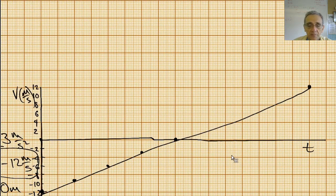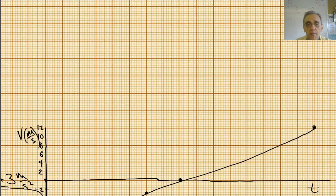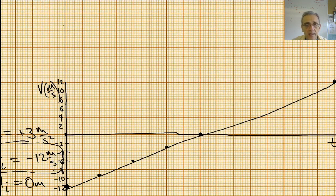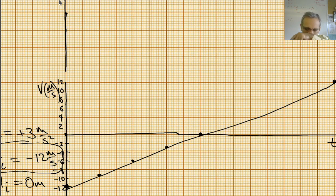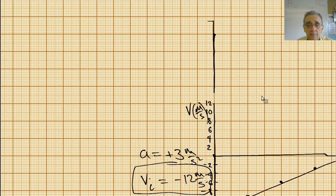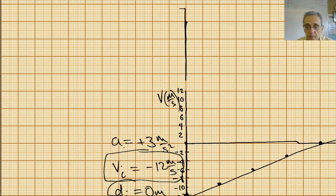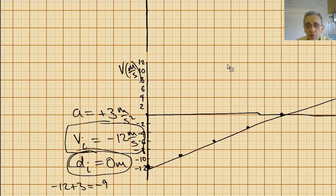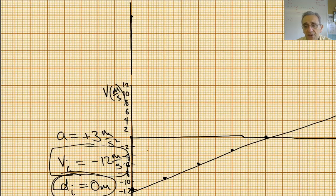Now, how am I going to figure out what my d-t graph looks like? I'll draw the x-axis, and what I know here is that initially my initial position is 0 — that was given. My initial position is 0. But I also know that the area under the graph here is all negative.